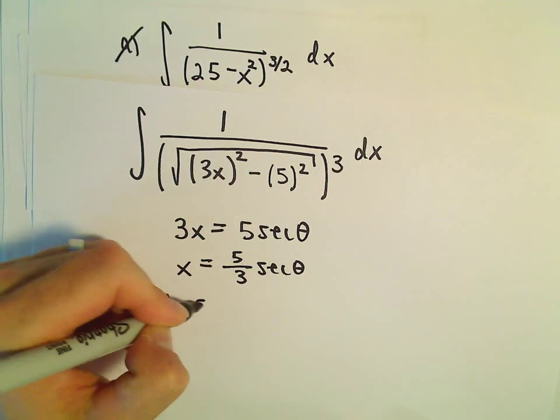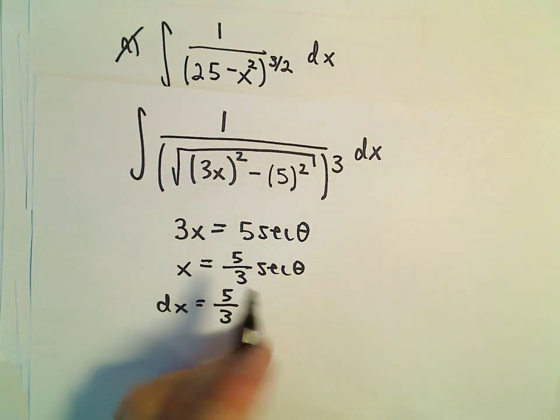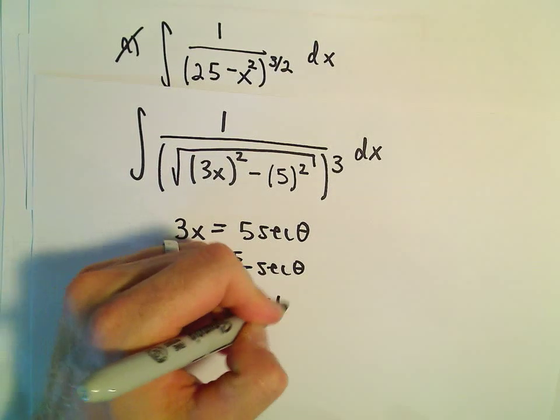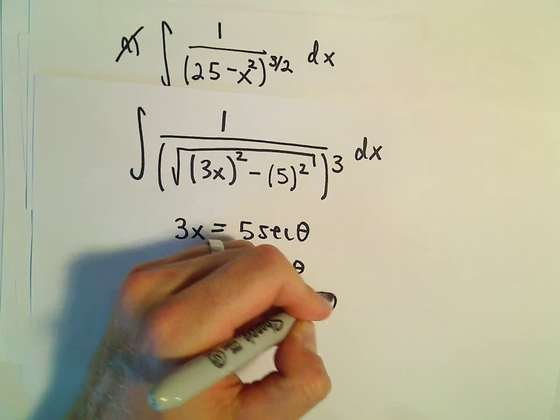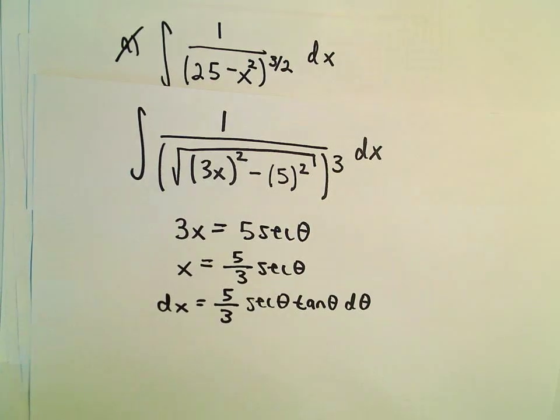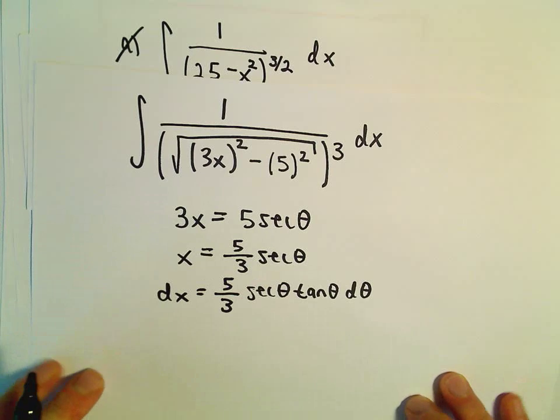And then it says our dx. Well, when we take the derivative of secant, we'll get secant theta times tangent theta. Let's check on our d theta. And now I'm just going to plug all this stuff in.